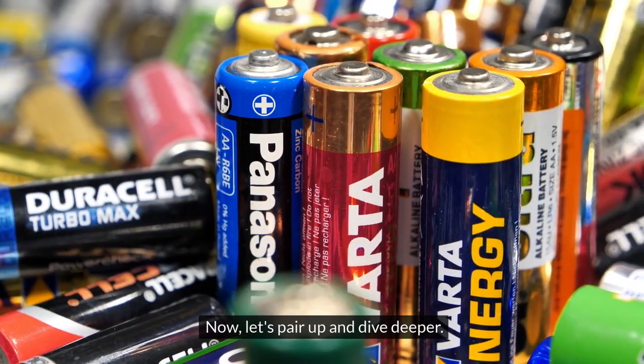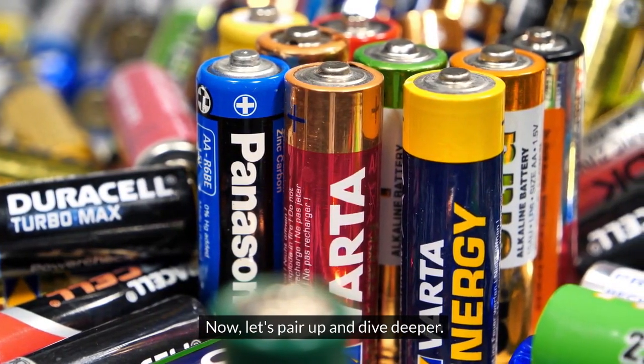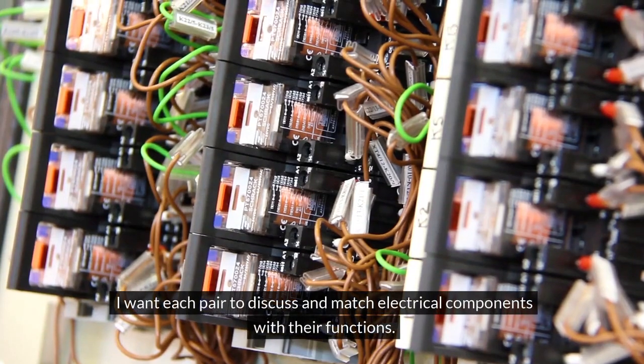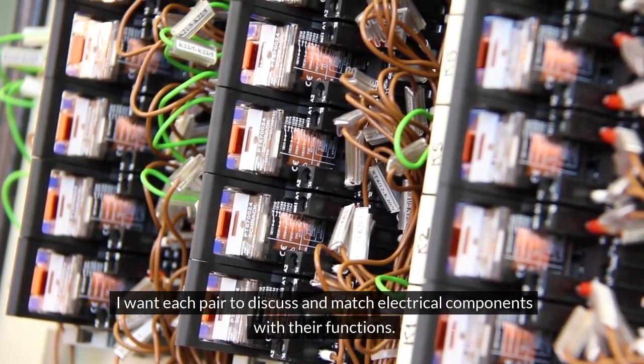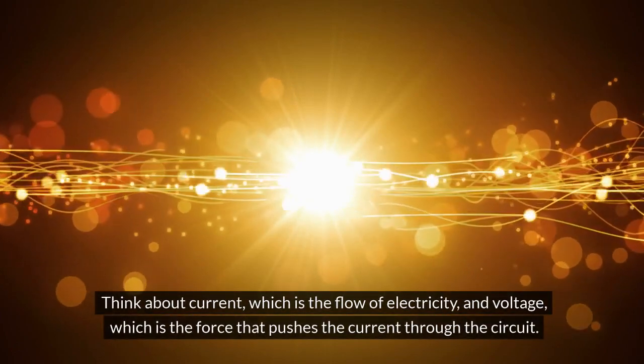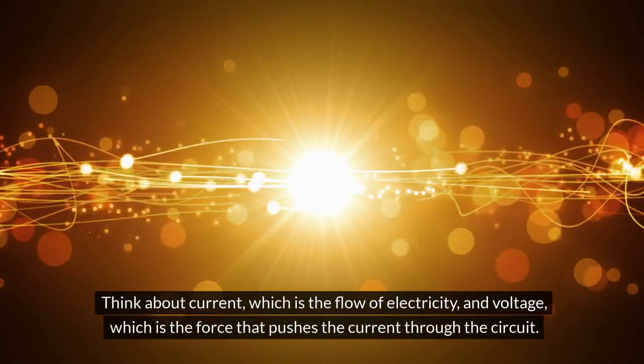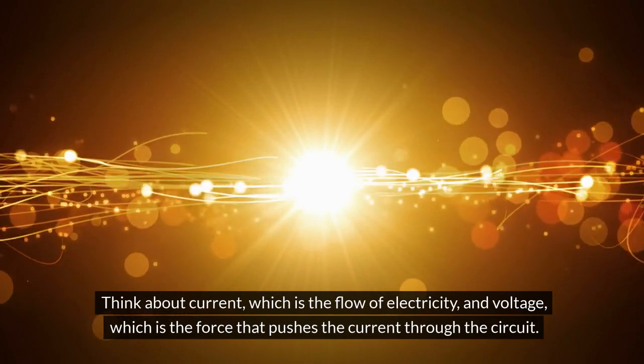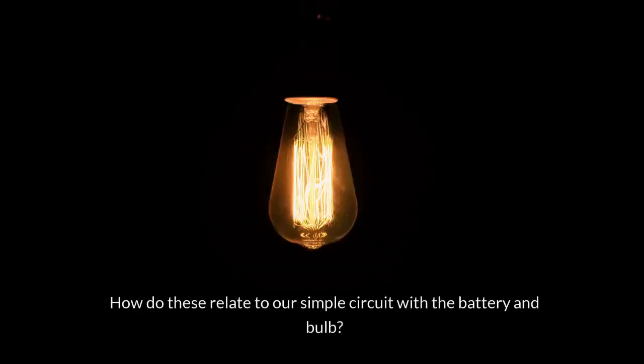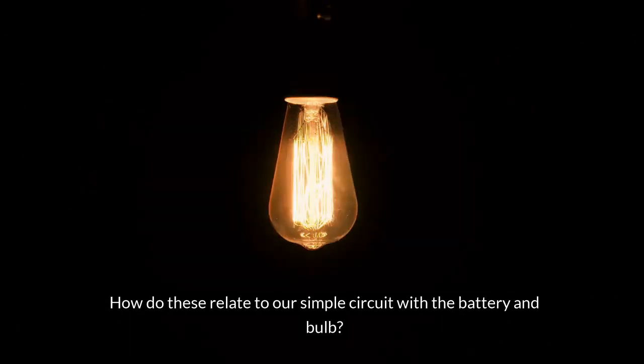Now, let's pair up and dive deeper. I want each pair to discuss and match electrical components with their functions. Think about current, which is the flow of electricity, and voltage, which is the force that pushes the current through the circuit. How do these relate to our simple circuit with the battery and bulb?